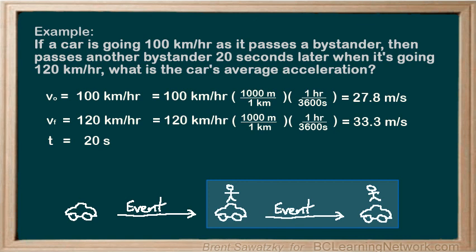Other variables that might be of interest would be D, or displacement — the distance the car traveled between the first bystander and the second — but we don't know that at this point, so we'll just put a question mark. We also don't know the acceleration, but that's what we're looking for. So at this point we have all of our variables laid out: what we know and what we don't know, much easier to look over. Organizing yourself like this is very helpful for moving forward in solving a problem, and I will expect each of your problems to include this step.